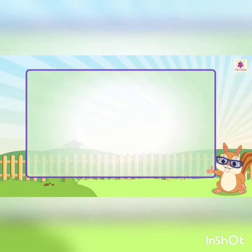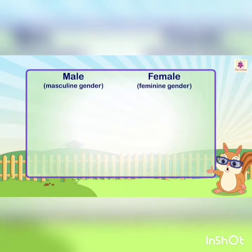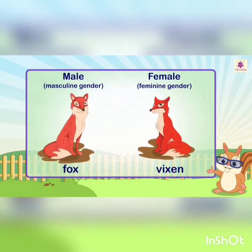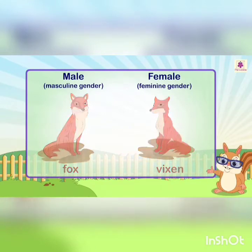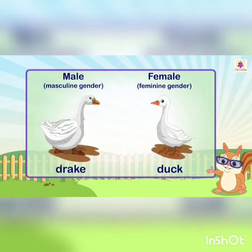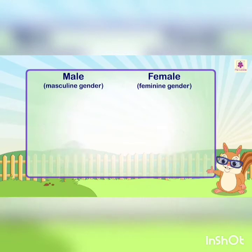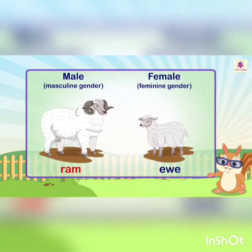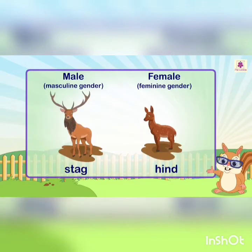Let us look at the names of the male and female animals of the same species. Fox — vixen, gander — goose, drake — duck, ram — ewe, stag — hind.